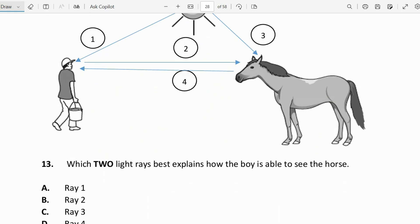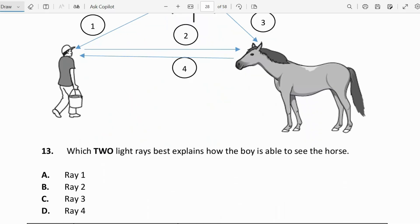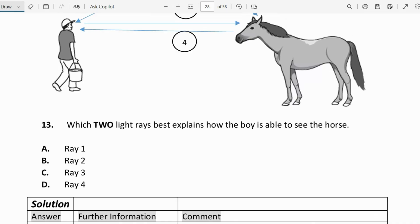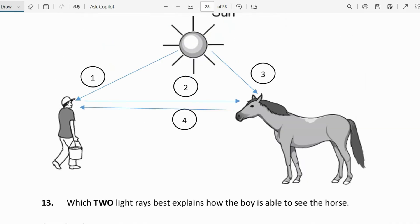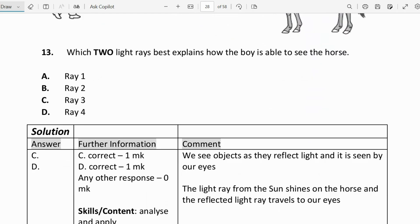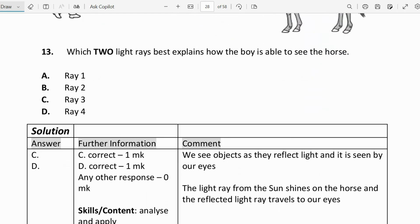Which two light rays best explain how the boy is able to see the horse? C is the correct answer, which is light ray three. When the sun forms the light ray and it shines on the horse, then that's how the boy is able to see the horse. We see objects as they reflect light and it is seen by our eyes. The light ray from the sun shines on the horse and the reflected light rays travel to our eyes.